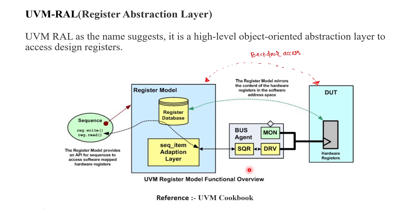For verifying a normal design, we have a bus agent which consists of a sequencer, driver, and monitor. The driver gets the bus sequence via the sequencer and drives it to the DUT based on the DUT's protocol. This protocol-following approach is the front door access. The monitor captures information from the DUT and broadcasts it to multiple components — scoreboard, reference model, and coverage collector — via the analysis port. Front door access always consumes some number of simulation clock cycles.